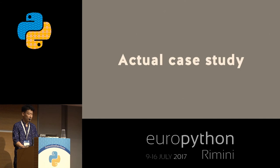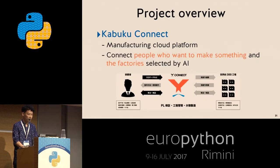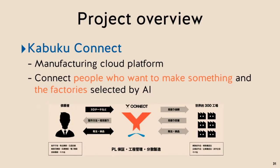For the final part of the presentation — actual case study. We provide a system called CubConnect, a manufacturing cloud platform that connects people who want to make something with factories that can make it. The factory selection process is done by AI trained with deep learning.